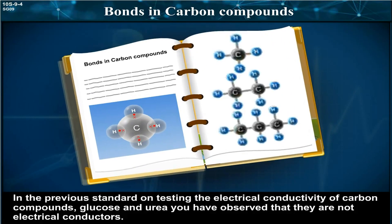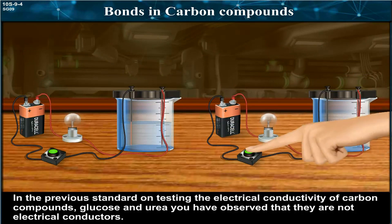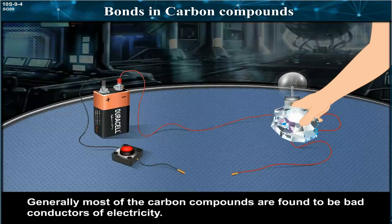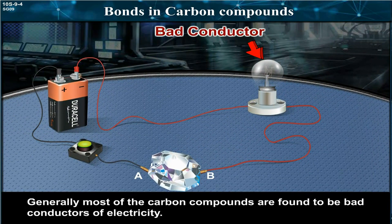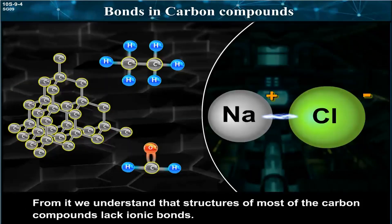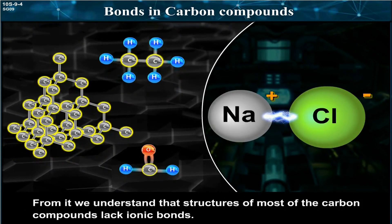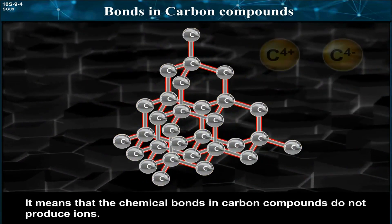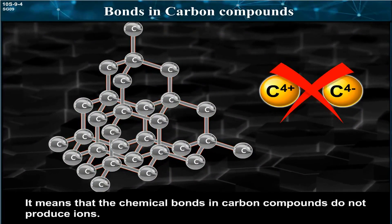In the previous standard, on testing the electrical conductivity of carbon compounds, glucose and urea, you have observed that they are not electrical conductors. Generally, most of the carbon compounds are found to be bad conductors of electricity. From it, we understand that structures of most of the carbon compounds lack ionic bonds. It means that the chemical bonds in carbon compounds do not produce ions.